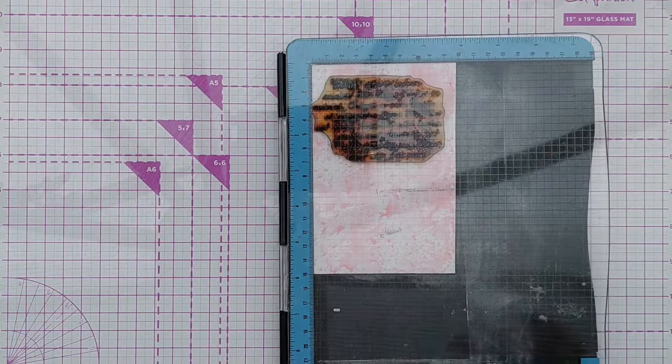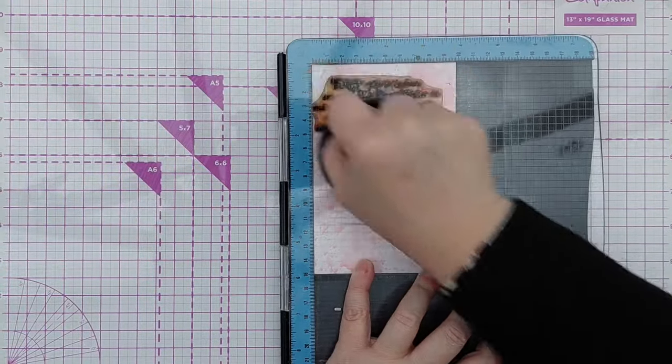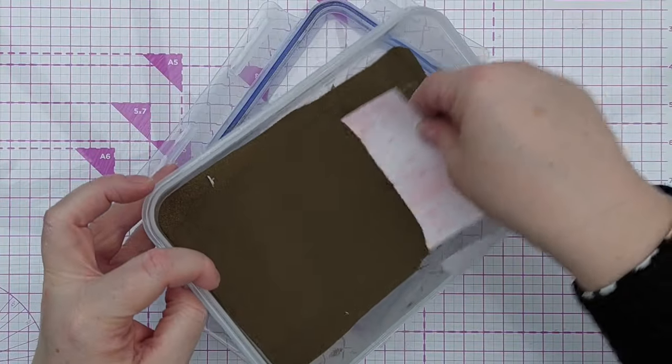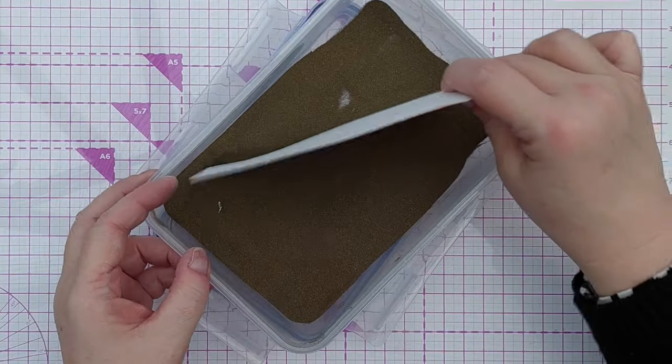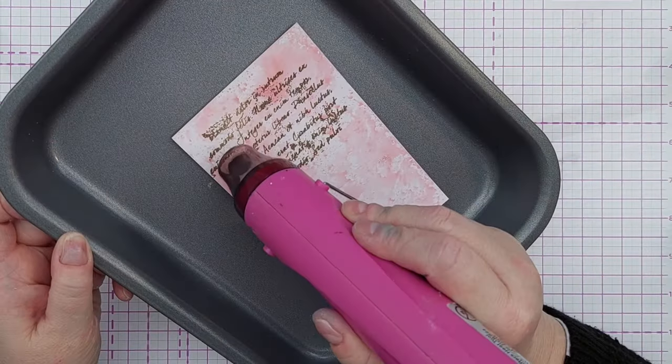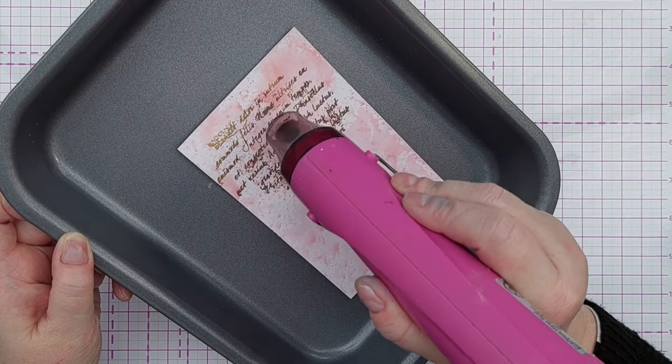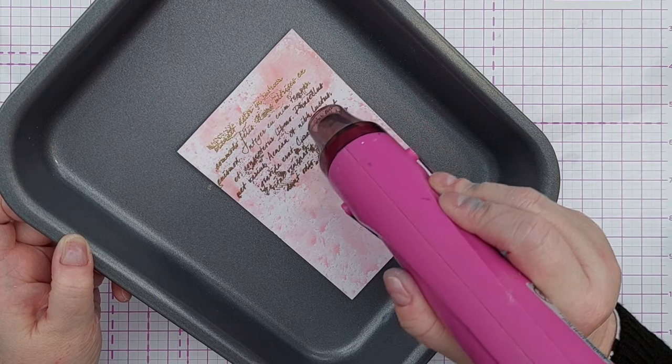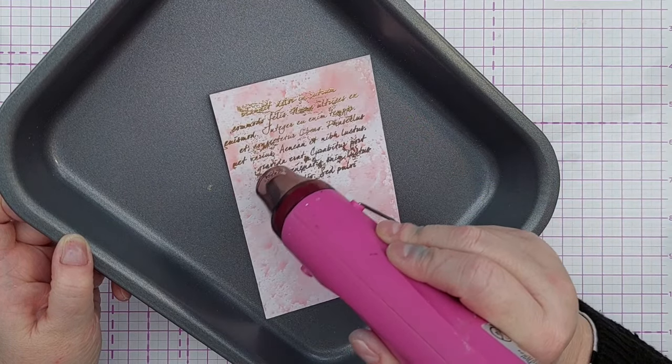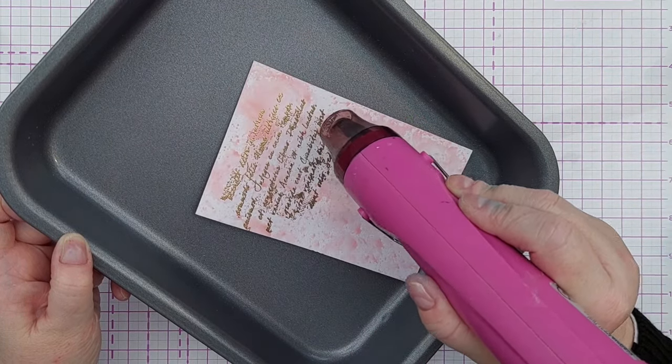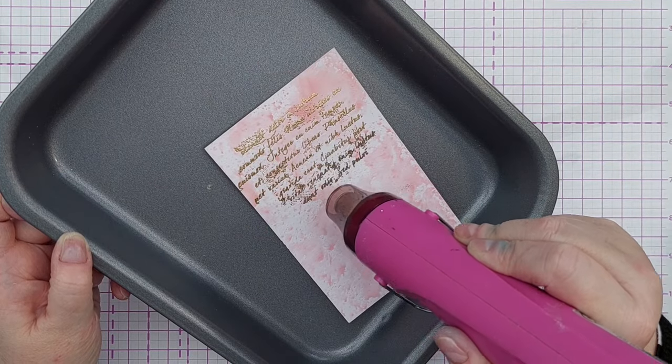Then I dipped my panel into some gold embossing powder and heated it with my heat tool. I'm leaving this bit in because it's just such a joy to watch that dull powder turn into that beautiful bright gold.